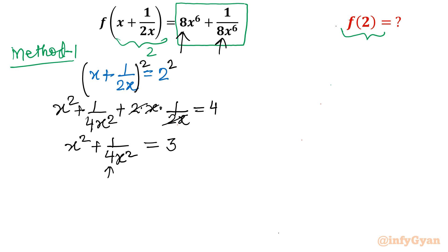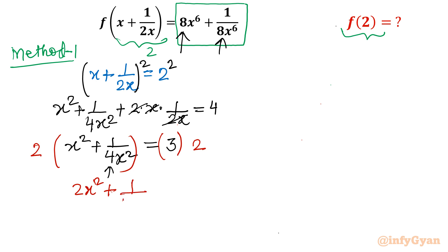Now the point is we are having 8 in the original expression but here it is only 4. So let me multiply both sides of the equation by 2. Once I multiply, it will become 2x² + 1/(2x²) = 6. The major task is done — now I have 2x² in the expression, and taking the cube of this equation will give me the required expression value.